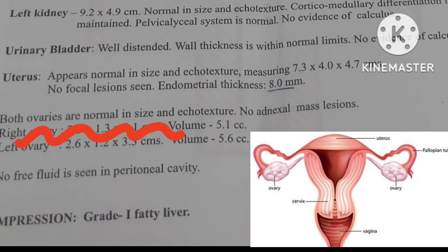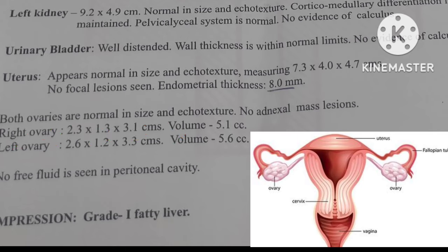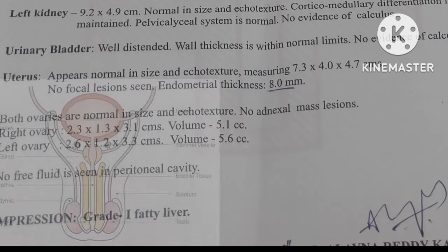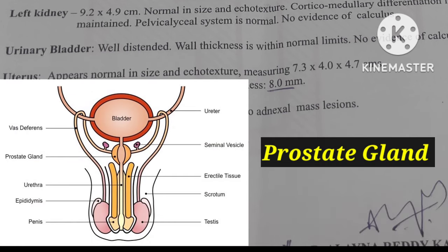Next come the ovaries. If normal, they mention normal. If enlarged, they mention enlarged ovaries. If there are multiple cysts, this condition is called polycystic ovarian disease. In males, the prostate gland is evaluated. If normal, they mention normal. If enlarged, the condition is called prostatomegaly.